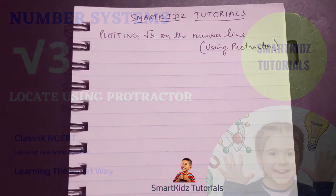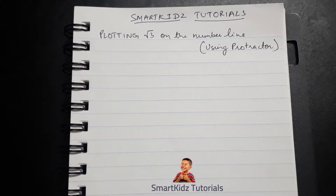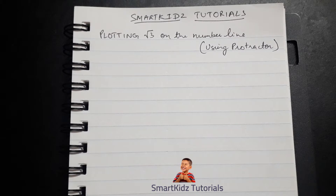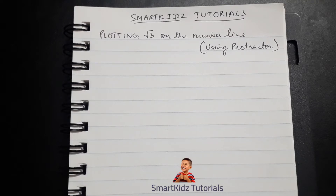Hello students, welcome to Smart Gates Tutorials. In this video we will be plotting root 3 on the number line. We'll try to locate root 3 on the number line using the protractor. In a previous video we located root 3 on a number line using the compass only, so here we will be using the protractor in order to draw our perpendicular.